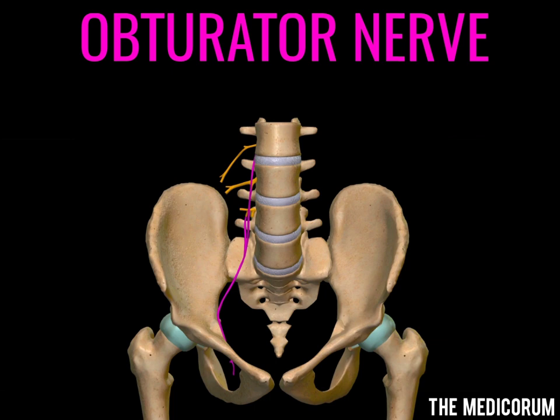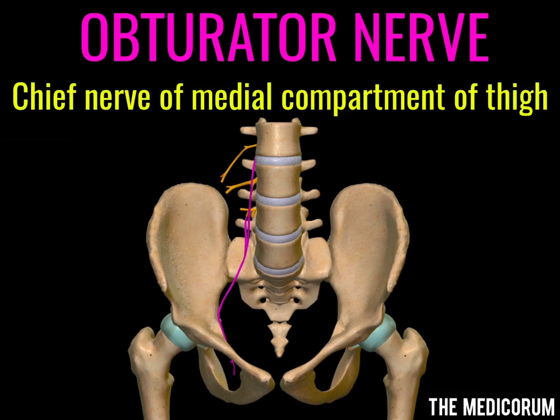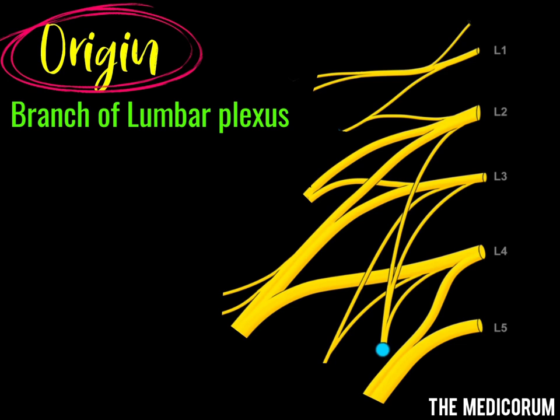The obturator nerve is the chief nerve of the medial compartment of the thigh. It arises from the lumbar plexus.